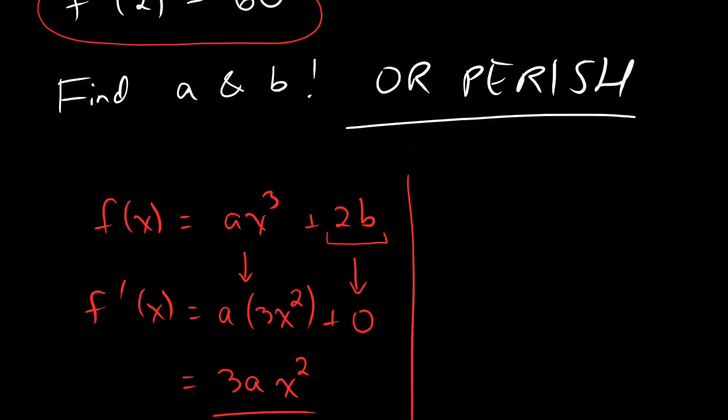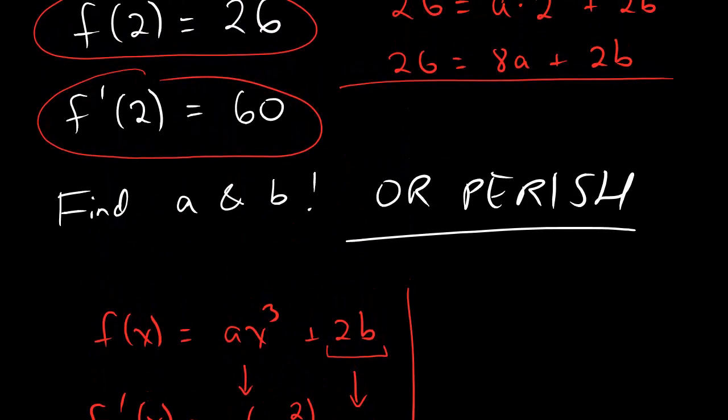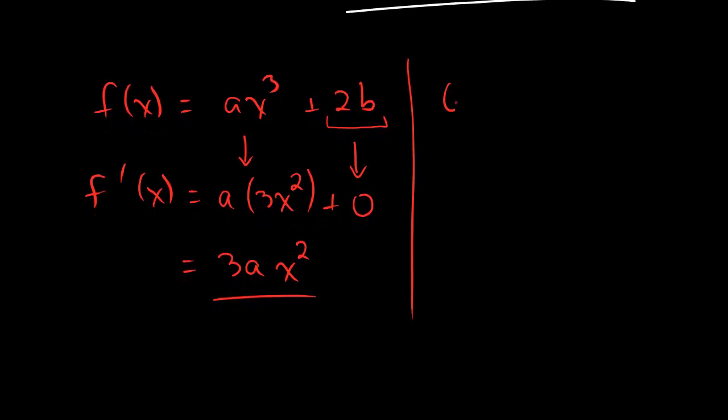Alright, now that's the derivative function, but we know a little bit more than just the random derivative. We know that if you plug in 2 into the derivative, you should get out 60. So, let's write that out. You should get out 60 if you plug in 2. And so, we can fill that in. 2 squared is 4. So, we've got 3 times a times 4. That should be 60.